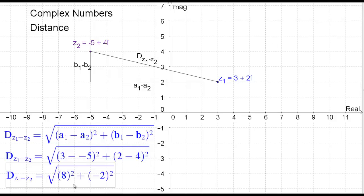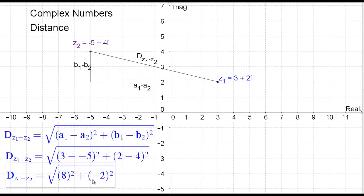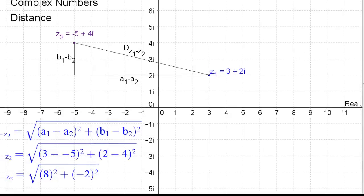That number 8 and minus 2 represents the difference between Z1 and Z2. If we took 3 plus 2i minus negative 5 plus 4i, we would get 8 minus 2i. The square root of the real part squared plus the imaginary part squared happens to be the modulus of that number. So a shortcut is to do the following: first find the difference between the two points — that's a new complex number — then find the modulus of that number, and you will have found the distance between them.